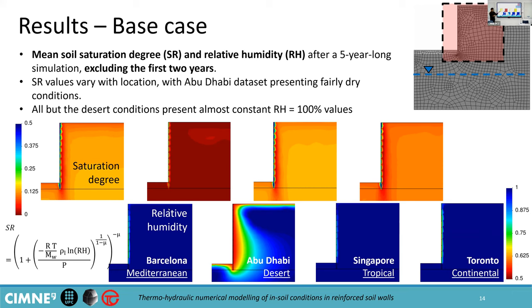Regarding degree of saturation, we can see that for three of the four cases, we have a mean value of around 10% throughout the structure, which is a little bit lower towards the exposed contours, and this value turns out to correspond to a constant 100% relative humidity throughout the soil mass. On the case of the desert location, we have scarce rain events with low intensity, so there's little water infiltration, meaning mean saturation values of 0%, which result in variable relative humidity values of around 60% to 100% depending on the depth.